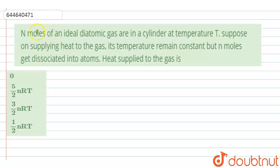The given question is: n moles of an ideal diatomic gas are in a cylinder at temperature T. Suppose on supplying heat to the gas, its temperature remains constant but n moles get dissociated into atoms.